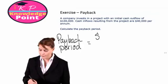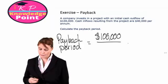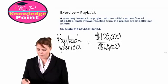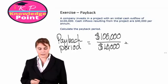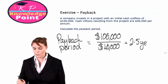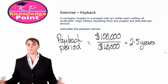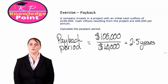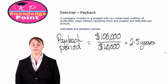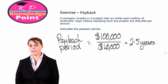Just apply our formula. $100,000 divided by our annual cash inflow of $40,000. Plug that into your calculators. You should get 2.5, and our payback period is in terms of time, so that's 2.5 years. It will take us 2.5 years to recoup the $100,000 we originally invested.